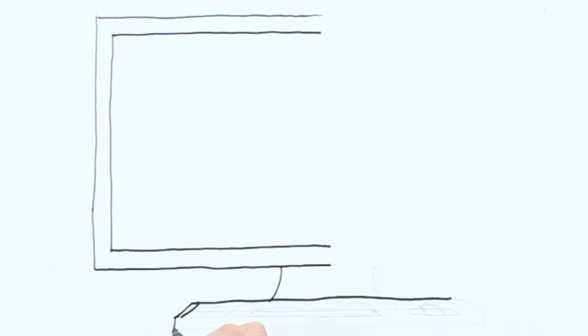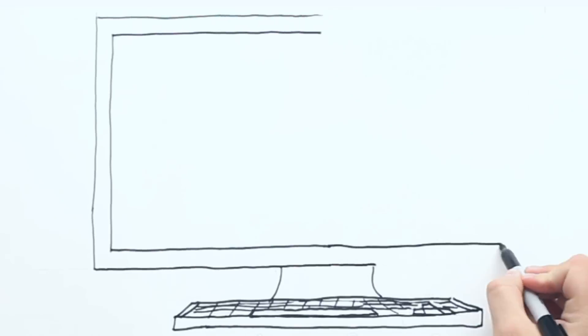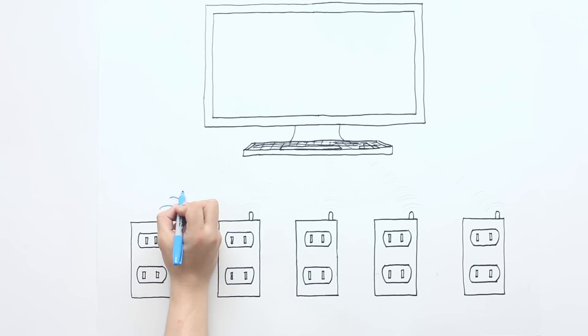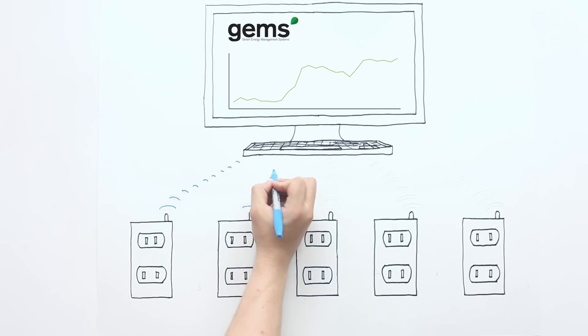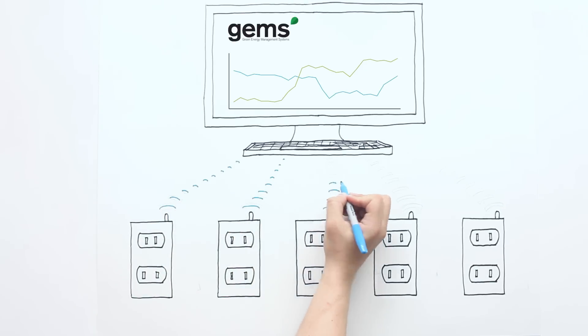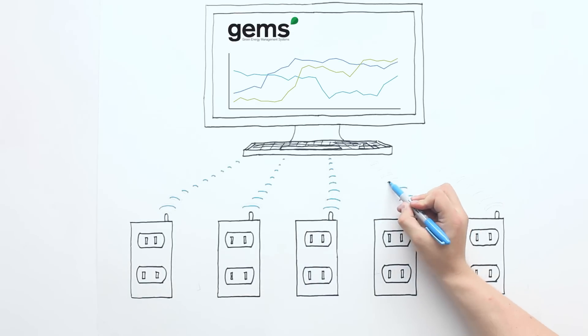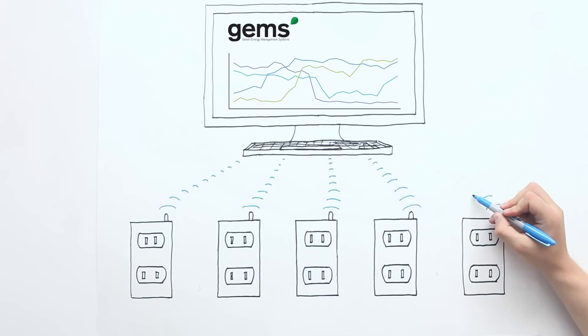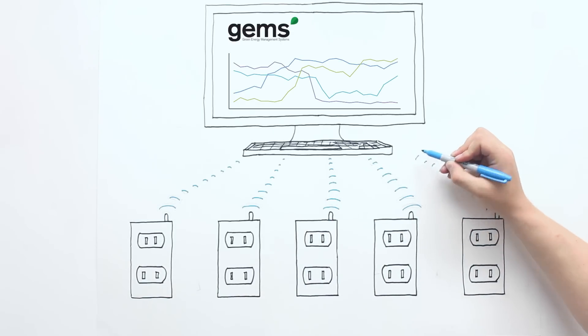Using wireless sensors and easy-to-understand visualizations, our solution enables facility managers to see and understand when, where, and how they're using power. By providing real-time metering of individual devices, our solution shows customers an energy profile of their entire operation, detailing inefficiencies and suggesting ways to correct them.